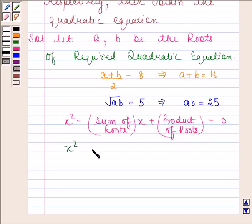So required quadratic equation is X squared minus 16X plus 25 is equal to 0. Hence our required answer is X squared minus 16X plus 25 is equal to 0.